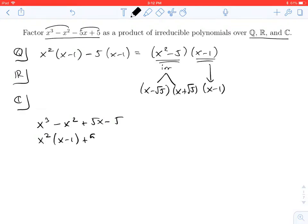But now, when I factor out the 5 and I get x minus 1, I keep factoring and I have x squared plus 5 times x minus 1.